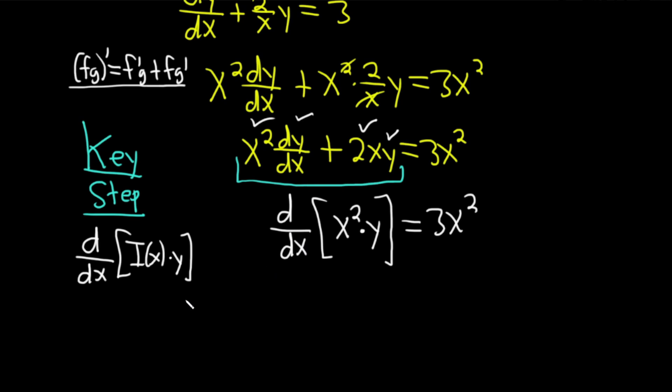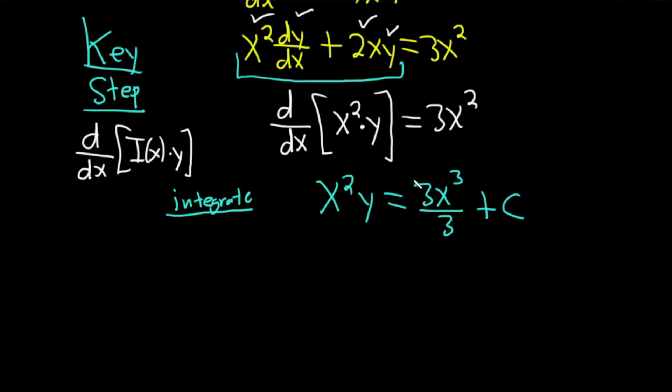To get rid of the derivative, we need to integrate. I'm not going to put an integral sign because it makes the problem look way more complicated. When you write integrate, you just integrate the derivative so it goes away. So you get x²y = 3x³/3 + C. We have some cleaning up here to do. We end up with x²y = x³ + C.